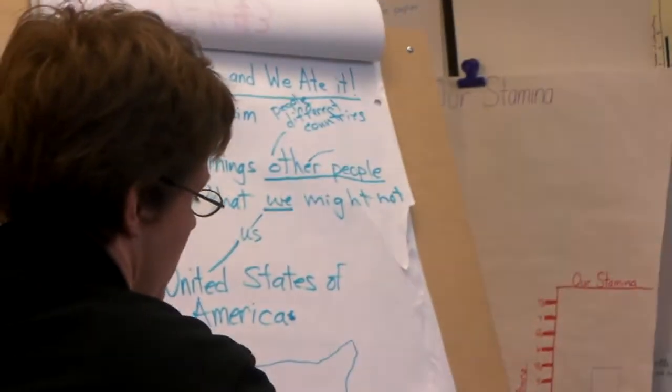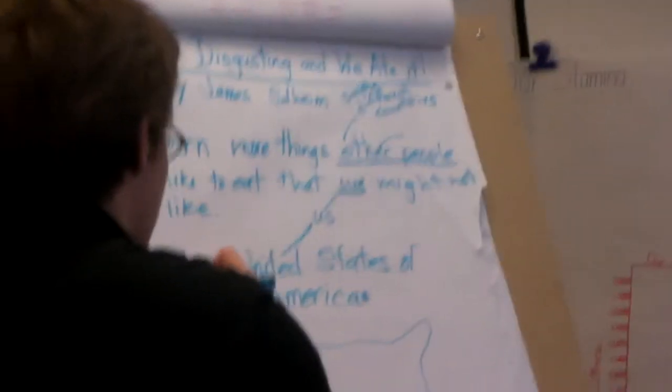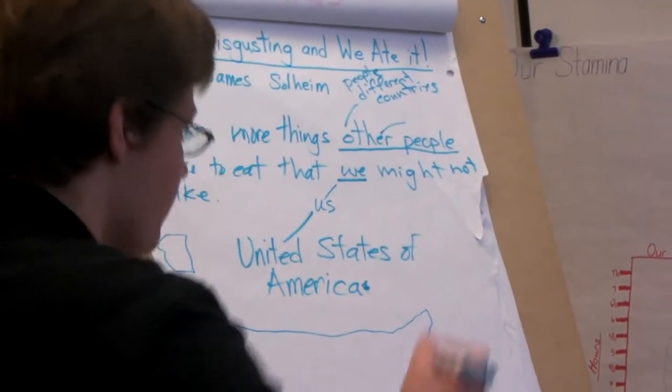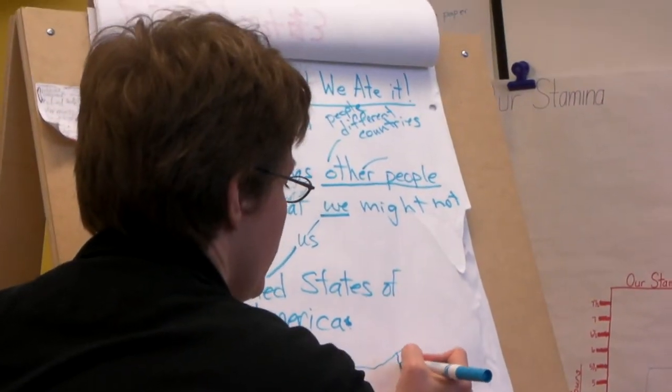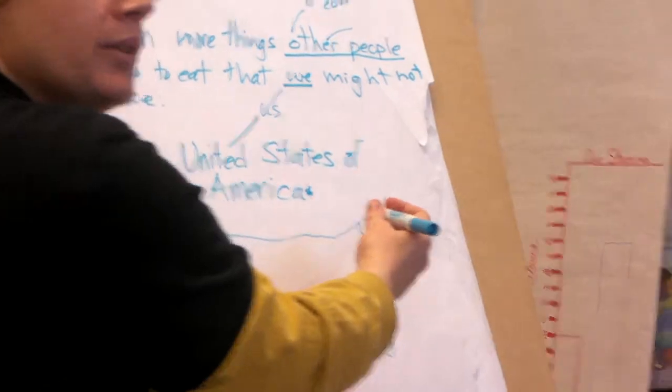Here we go. All right. This is my kind of drawing. And then we've got Alaska up over here. And we've got Hawaii down over here. Okay. Here's Maine. Here is where I live. I live in Maine. Who else lives in Maine?